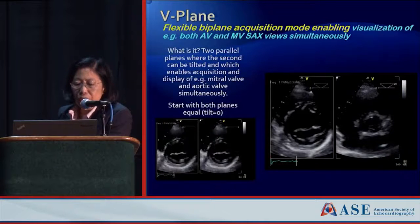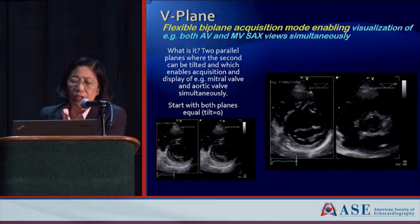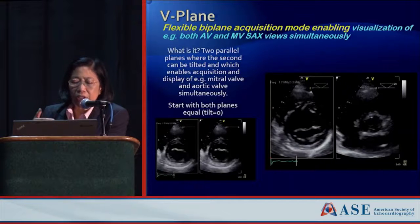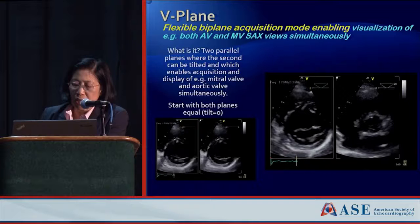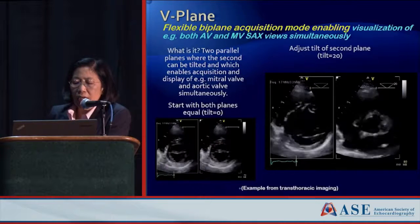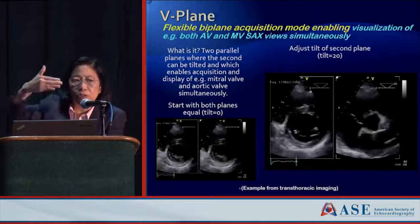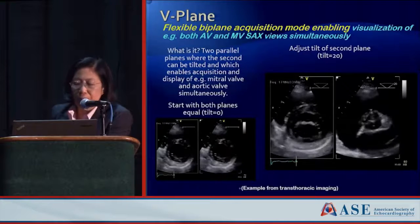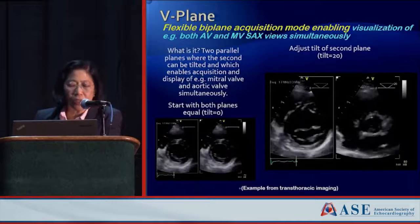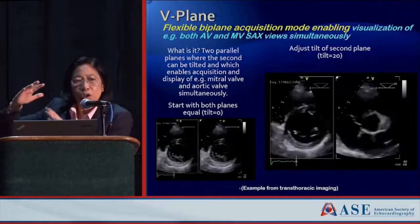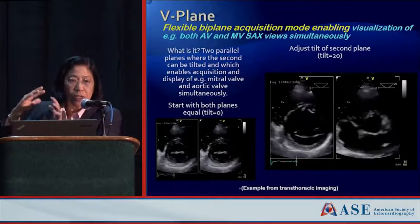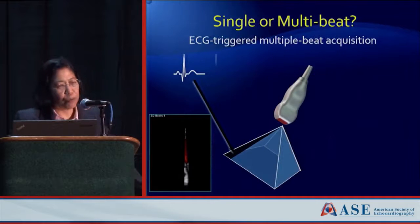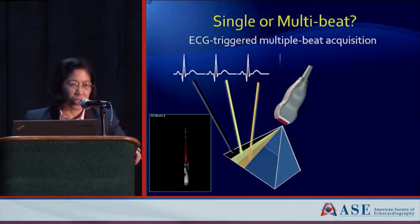V-plane, shown here on transthoracic but similar for TEE, allows you to sit in one plane and tilt in the orthogonal plane in multiple directions. We can stay in a short axis view but tilt within that view — either anteriorly to see the aorta, or posteriorly to see the apex. This ability to tilt in all directions within a 3D volume lets us very easily see structures in multiple aspects of that volume.